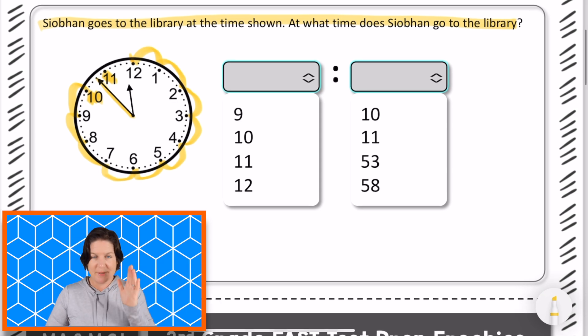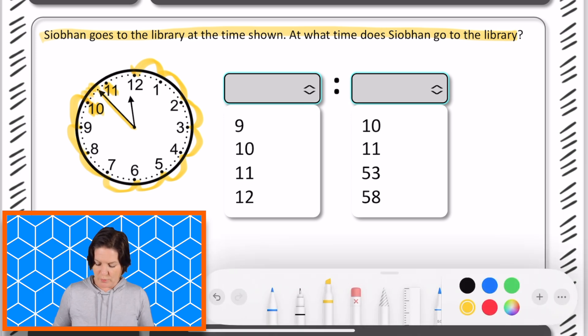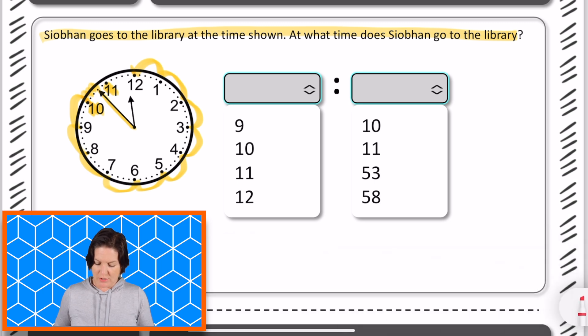Because I'm at 50 and I'm going to count by ones now. So 50, 51, 52, 53. So we have 53 minutes on our clock. And the minute hand is actually over here. So I would drop down and put the 53, select the 53.